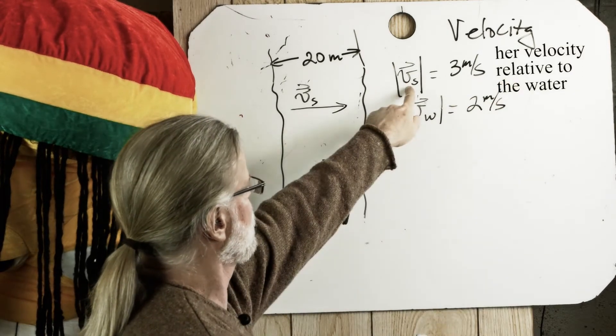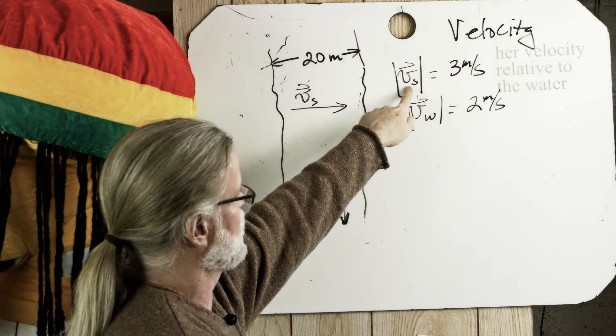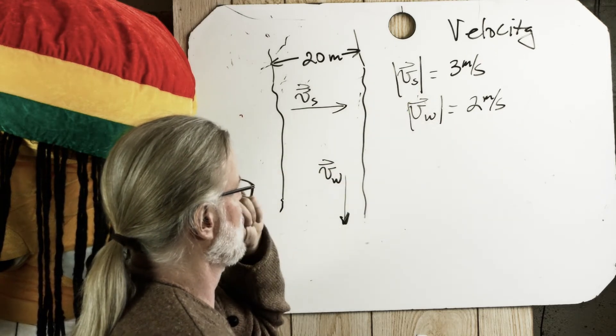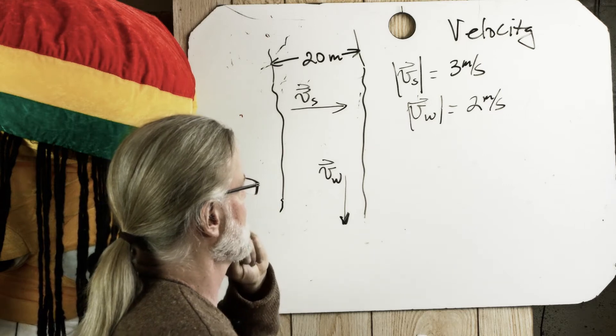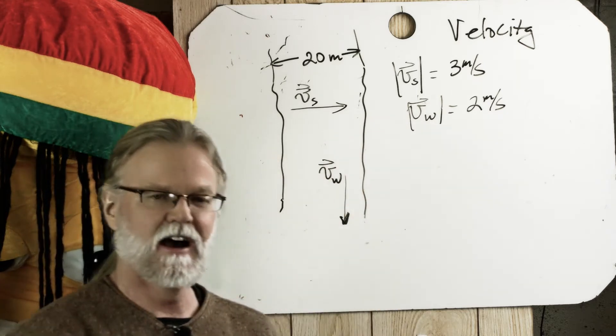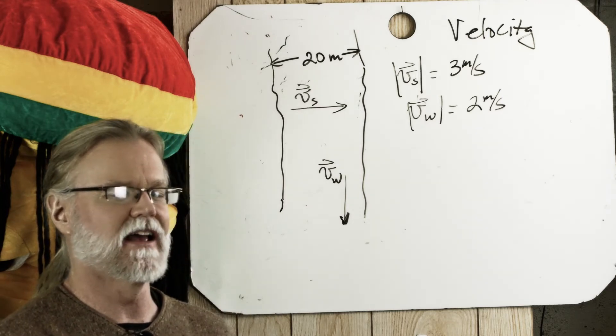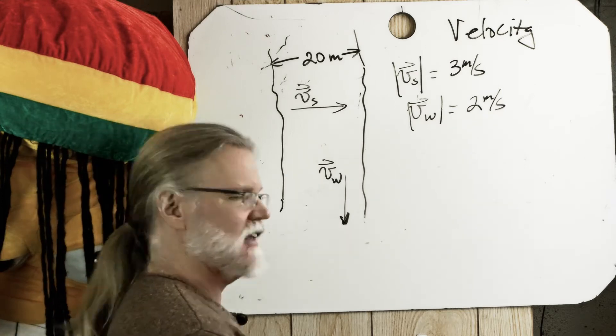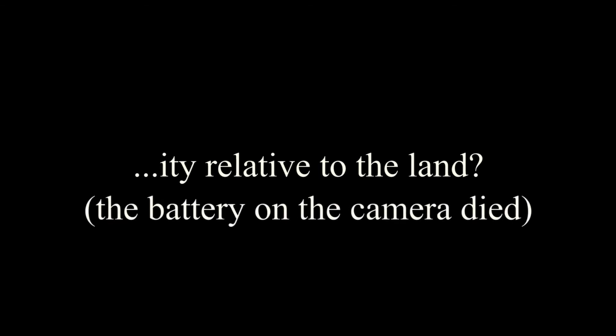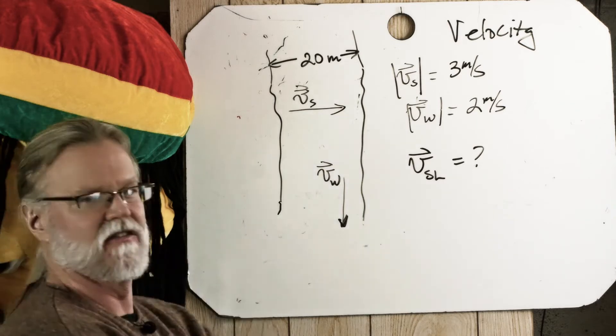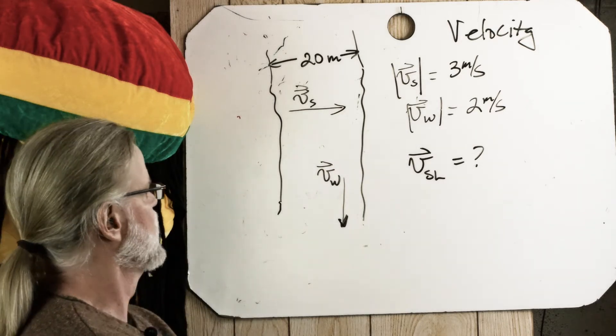Now this is the velocity of Sally relative to the water, and this is the velocity of the water relative to the land. So the question is, how fast is Sally going relative to the land? Well, not just how fast, but what is Sally's velocity? Why don't you find the velocity vector of Sally relative to the land?